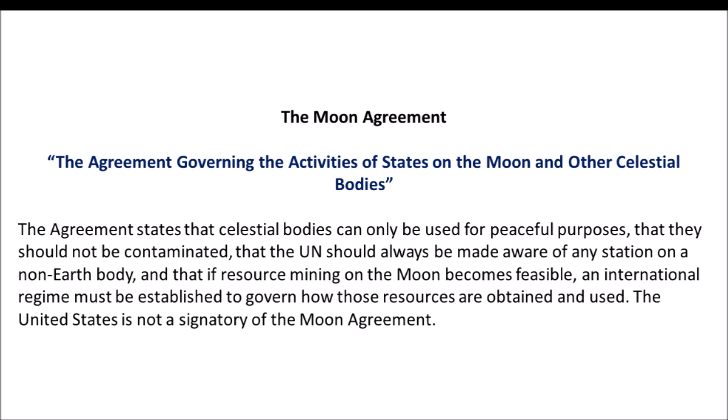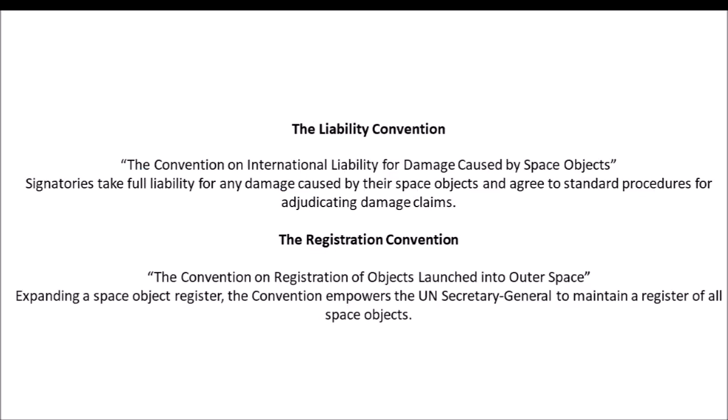The Moon Agreement governs the activities of states on the moon and other celestial bodies. The agreement states that celestial bodies can only be used for peaceful purposes and must not be contaminated, that the UN should always be made aware of any station on a non-earth body, and that if resource mining on the moon becomes feasible, an international regime must be established to govern how those resources are obtained and used.